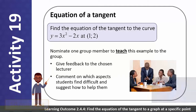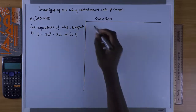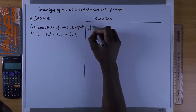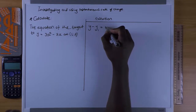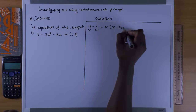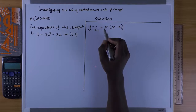Let's watch a video of the solution. We have to calculate the equation of the tangent to y = 3x² - 2x at the point (1, 2). A tangent is a straight line, so the equation is y - y₁ = m(x - x₁). We don't have the gradient yet, but we can find it.